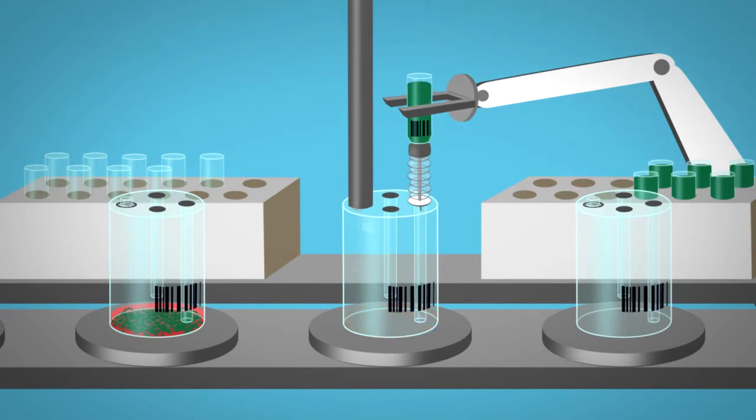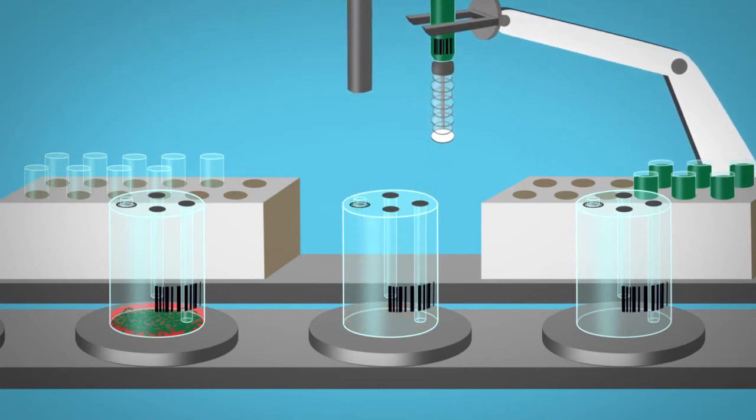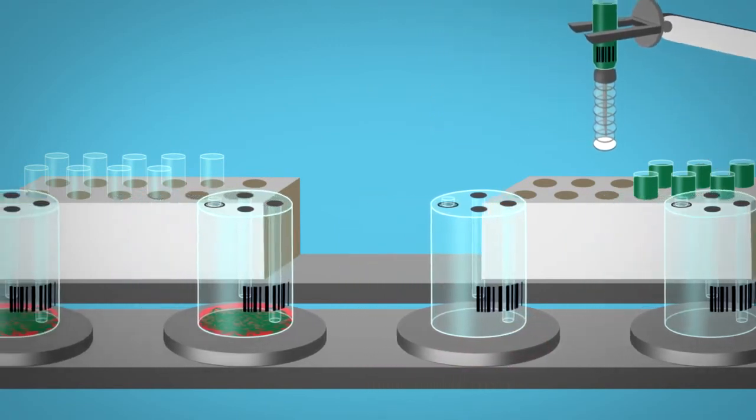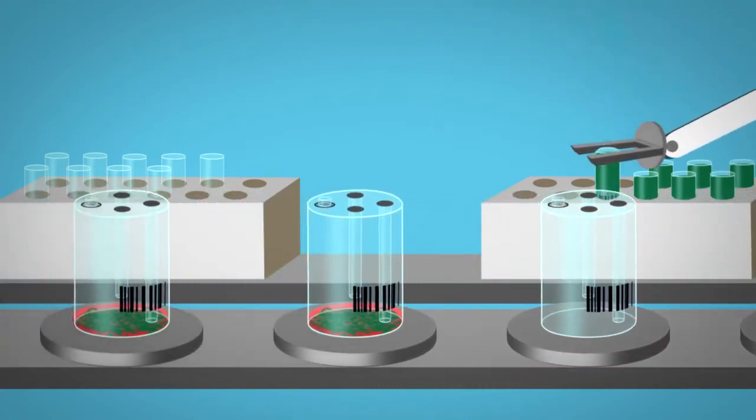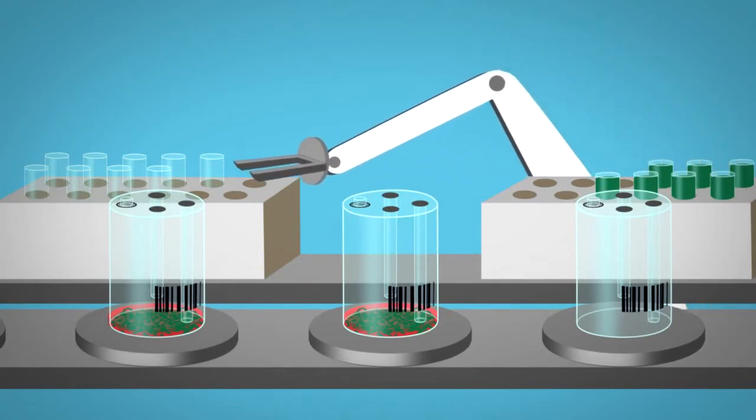To harvest the cells, a cell collection container is docked onto the G-REX, which is pressurized with sterile gas to drive the remaining amount of media and all the cells into the cell collection container.